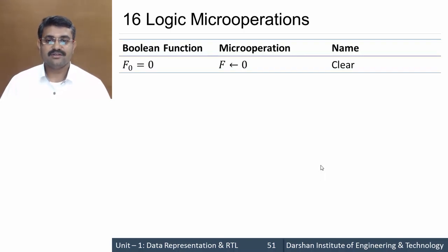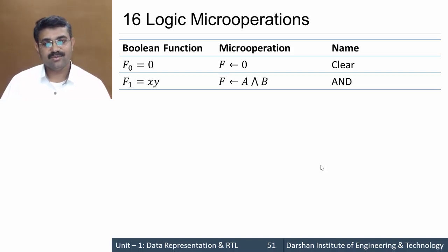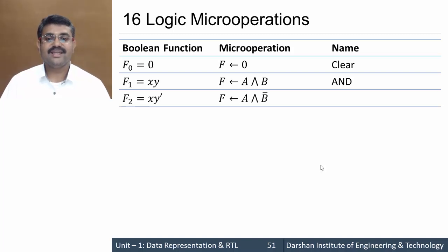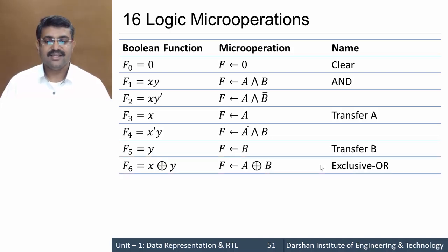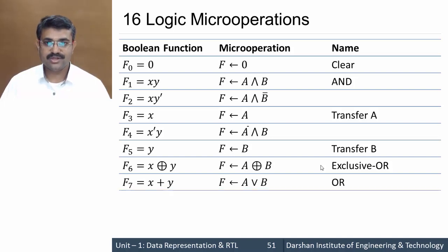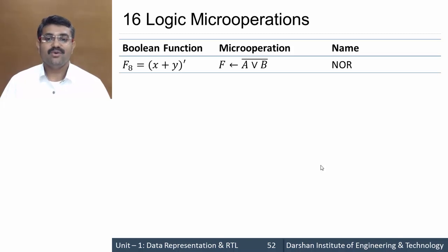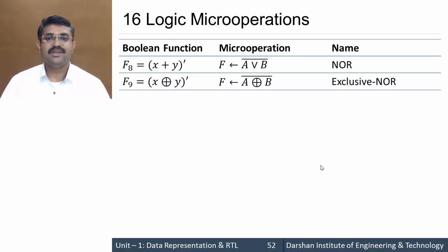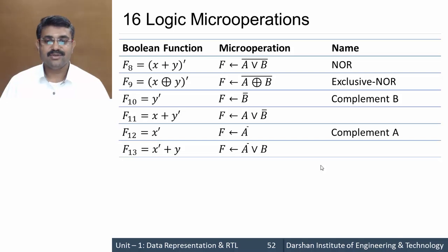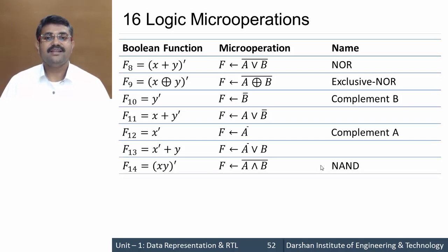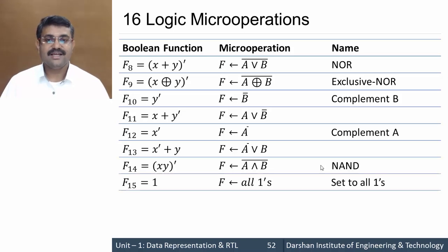The 16 logic micro operations are: clear, AND (A AND B), A AND B complement, transfer A, A complement AND B, transfer B, A XOR B, A OR B, NOR (A OR B whole complement), exclusive NOR (A XOR B complement), B complement, A OR B complement, A complement, A complement OR B, NAND (A AND B whole complement), and lastly setting all bits to 1.